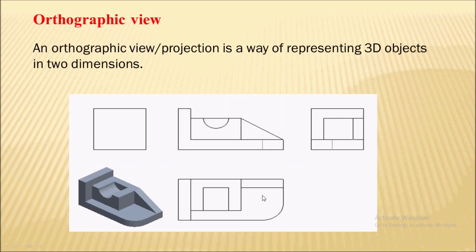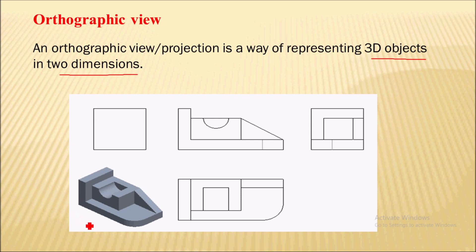The next type of view is the orthographic view. The orthographic view is a way of representing a three-dimensional object in two dimensions — it is basically a 2D view of a three-dimensional object. If I look from this side, this will be your front view, top view, and side views.